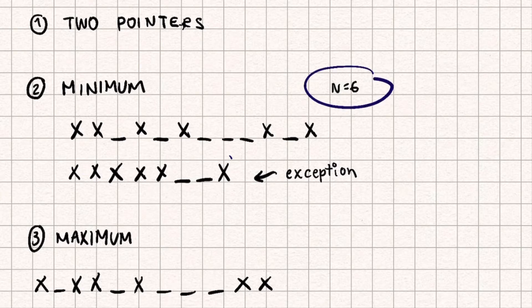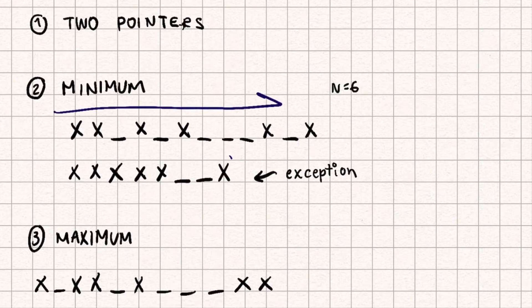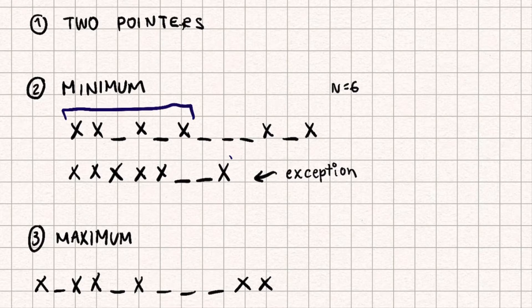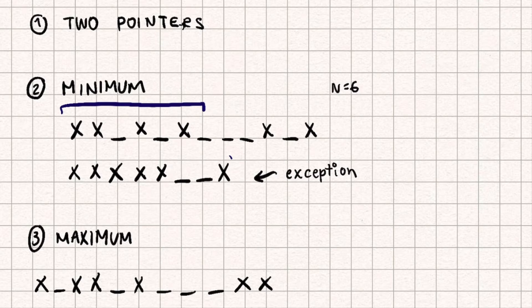Let's use an example where N equals 6. For the minimum number of moves, I want to move the least amount of cows. Using two pointers, I'm going to sweep across and find the biggest number of cows already within a range of size N. At the end, the cows need to be grouped in a block of N, so in this example a block of six. I'll loop through using two pointers to find the location with the most cows already in that block.